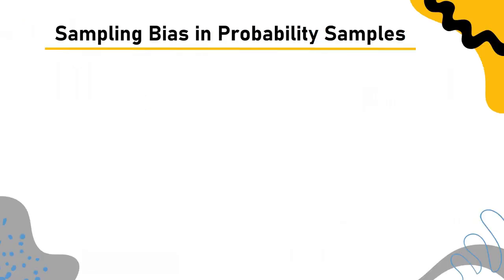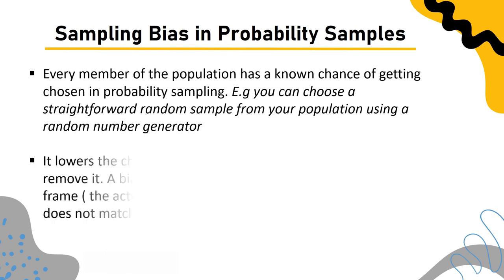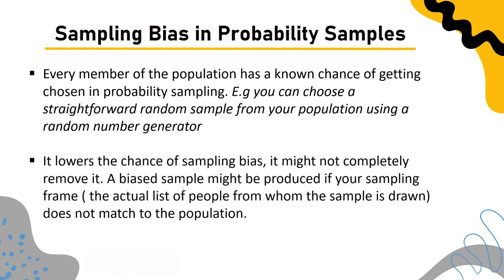Sampling bias in probability samples: Every member of the population has a known chance of being chosen in probability sampling. For example, you can choose a straightforward random sample using a random number generator. Although this method lowers the chance of sampling bias, it might not completely remove it. A biased sample might be produced if your sampling frame — the actual list of people from whom the sample is drawn — does not match the population.